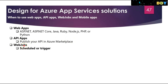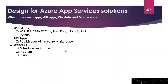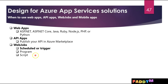Web jobs are scheduled or triggered. You can use the web jobs feature to run a program or script. Supported programs include Java, PHP, Python, and Node.js. Scripts can include batch, CMD, PowerShell, or Bash files. Web jobs can be scheduled and triggered based on set times, and are often used to run background tasks as part of your application logic.